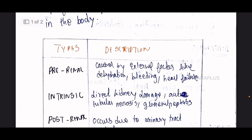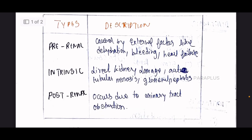Let's talk about three types: Pre-Renal, Intrinsic, and Post-Renal. Pre-Renal is caused by external factors like dehydration, bleeding, and heart failure. The problem is not in the kidney itself.